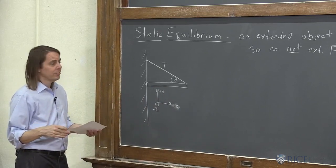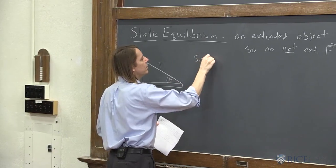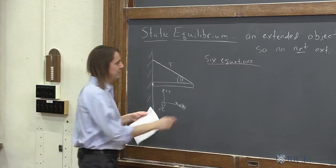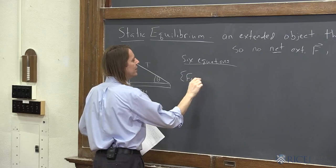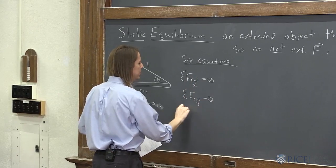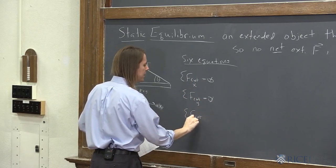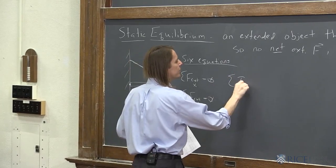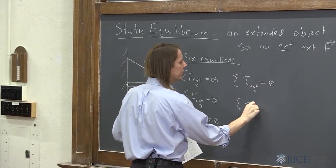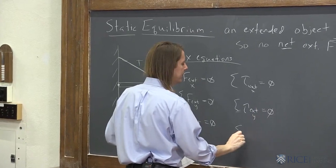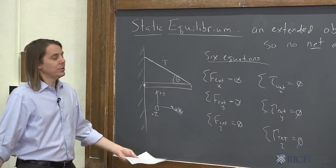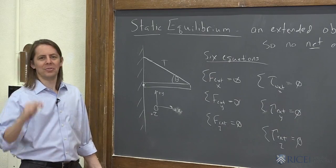And it feels like an embarrassment of riches here because we have six equations. Right off the bat, in any kinematics or any static equilibrium problem, six equations to play with. You have the sum of the external forces in the x equals zero, the sum of the external forces in the y equals zero, the sum of the external forces in the z equals zero. How could you possibly go wrong with that many equations? You could have six unknowns and still solve the problem.